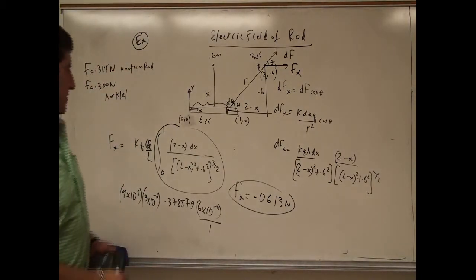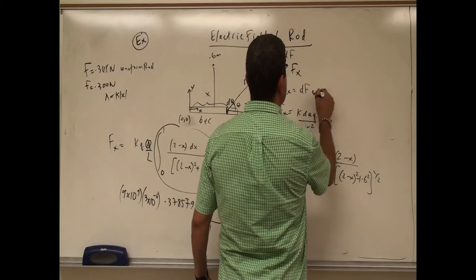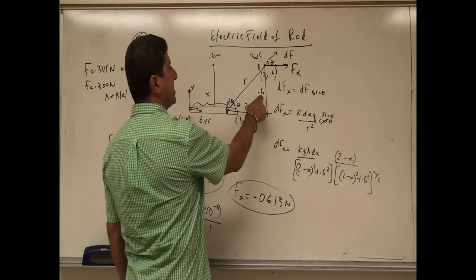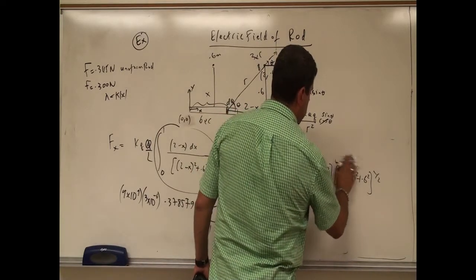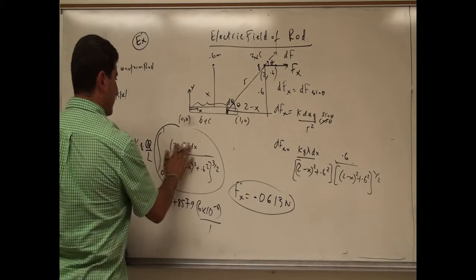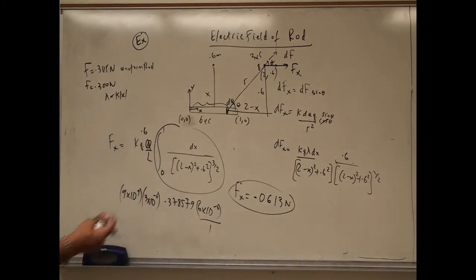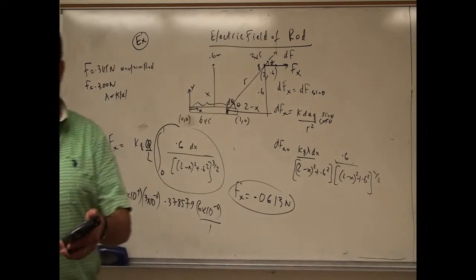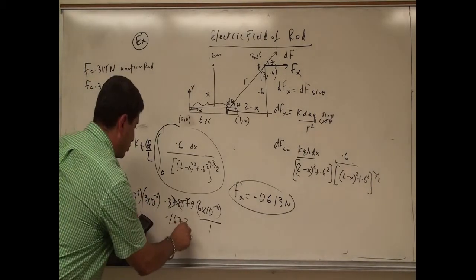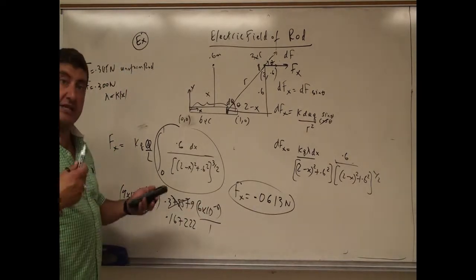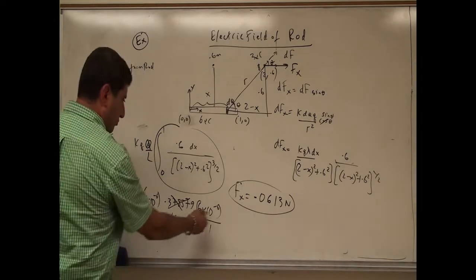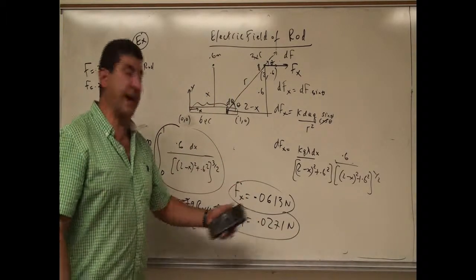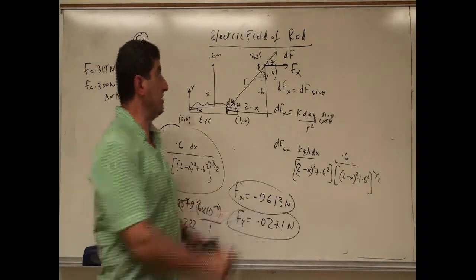Then we do the same thing for fy. The only difference is we use sine theta instead of cosine theta. Sine theta equals 0.6 divided by r, so instead of (2 minus x) in the numerator, we just have 0.6. We reintegrate with 0.6 on top instead of (2 minus x). The result is smaller, so fy is smaller than fx. We multiply by the same constants.